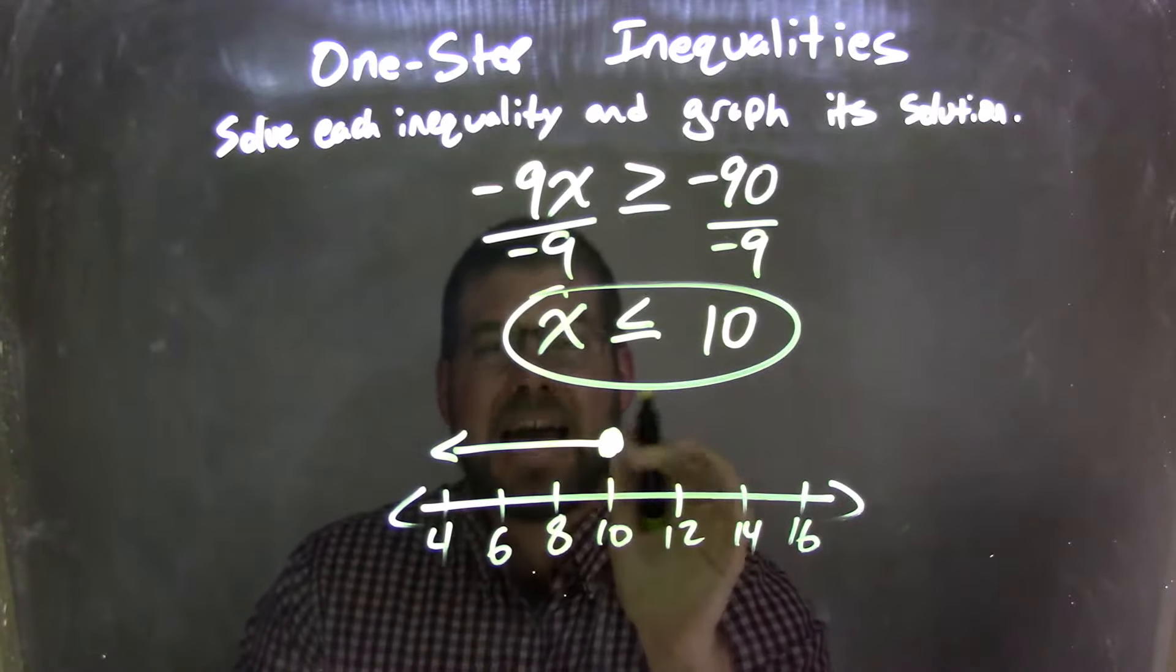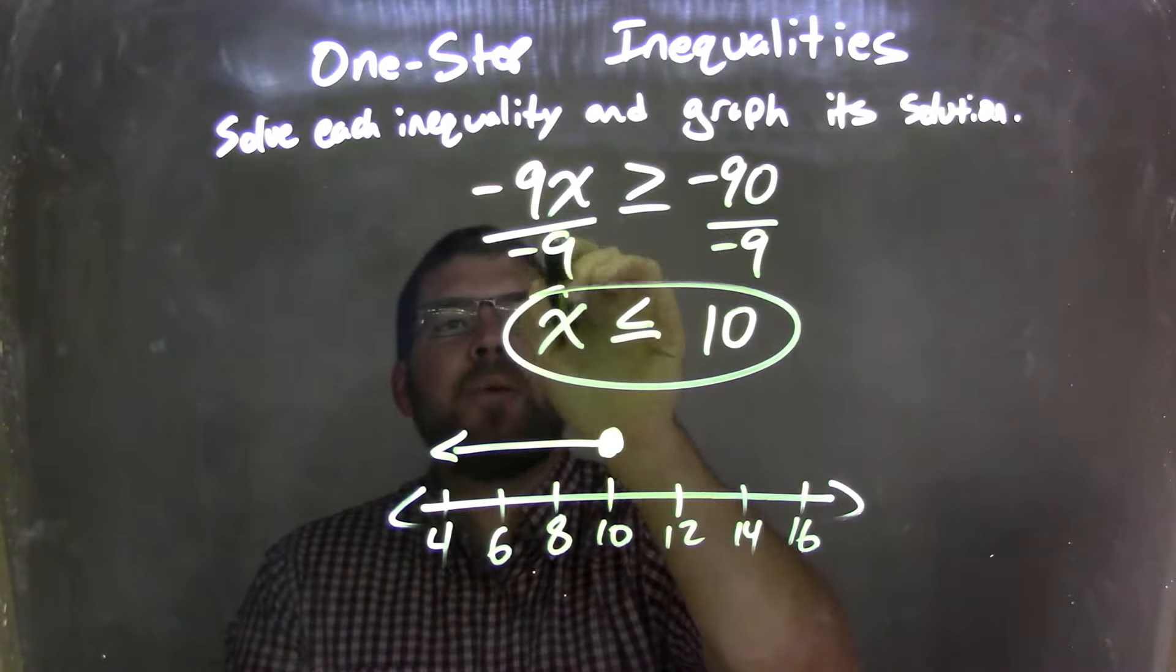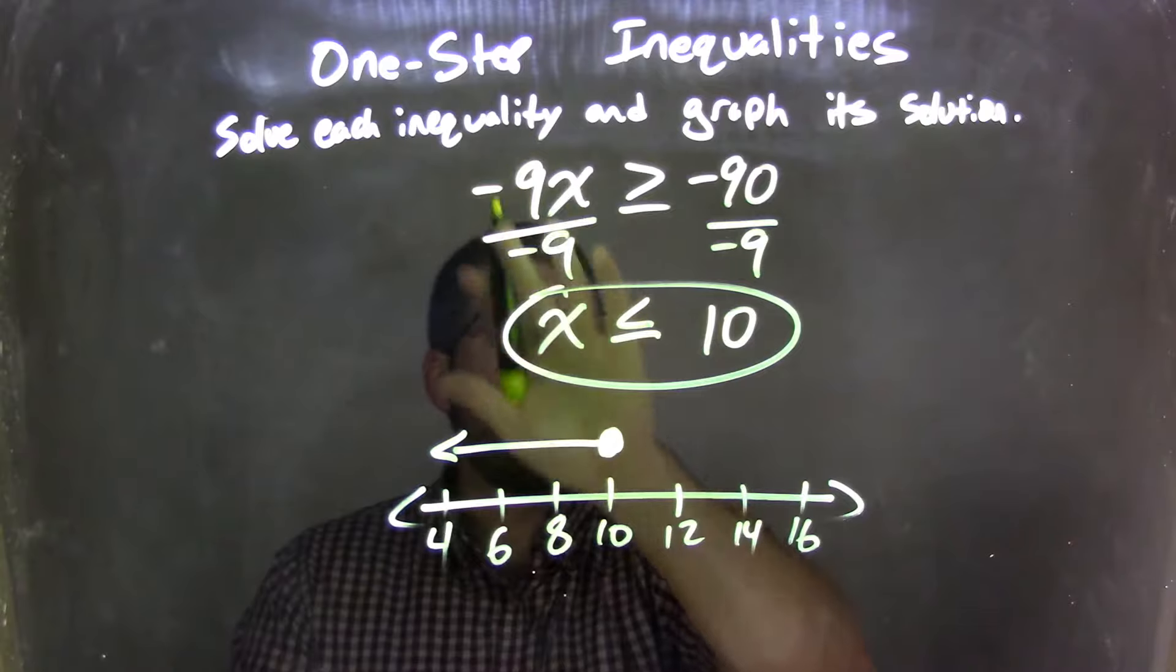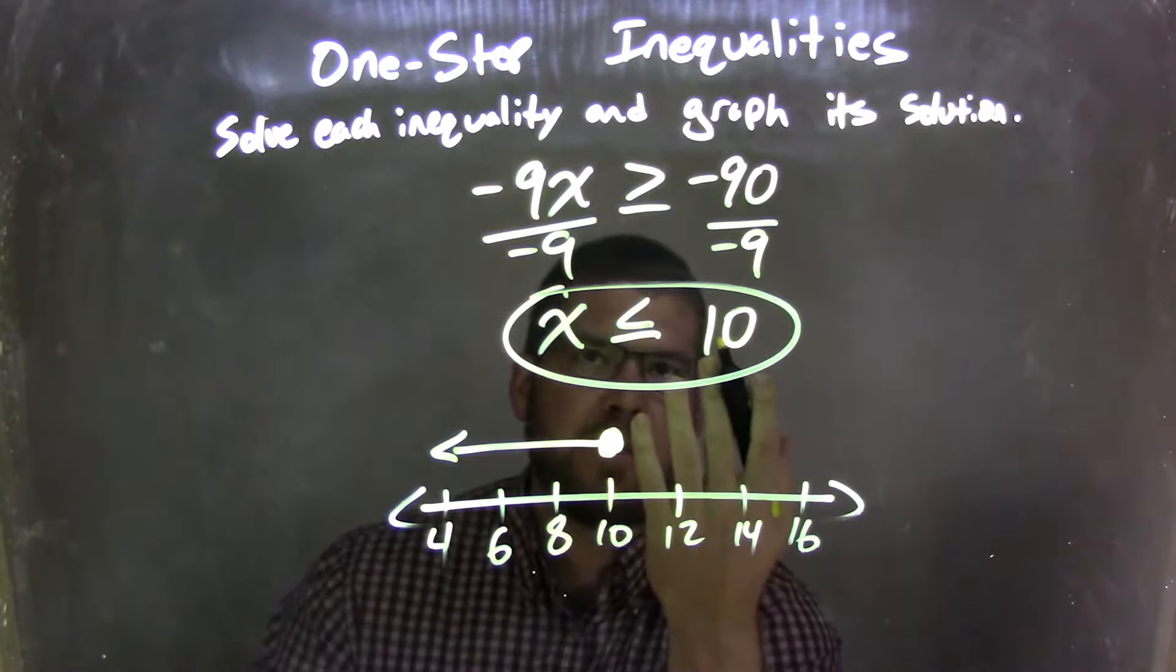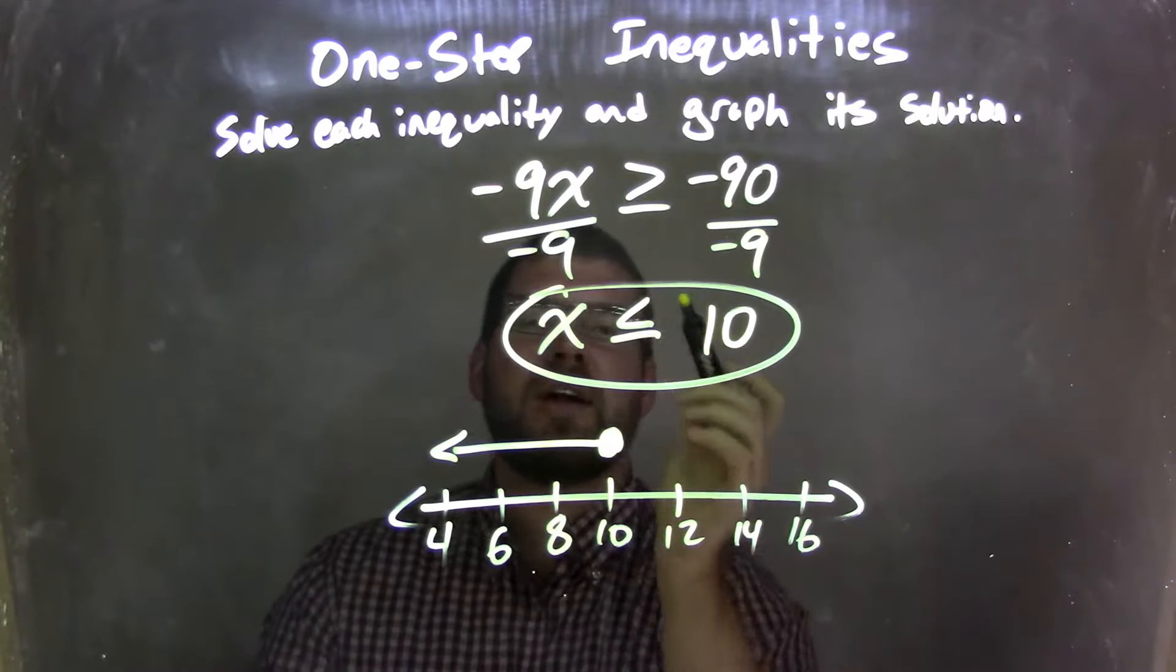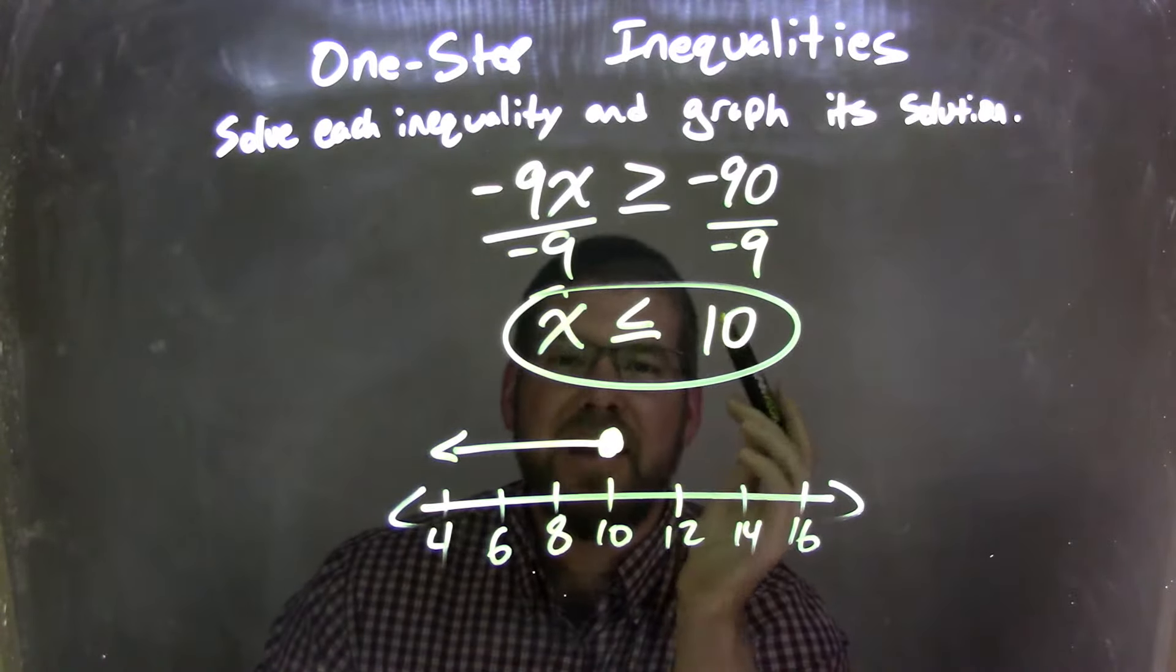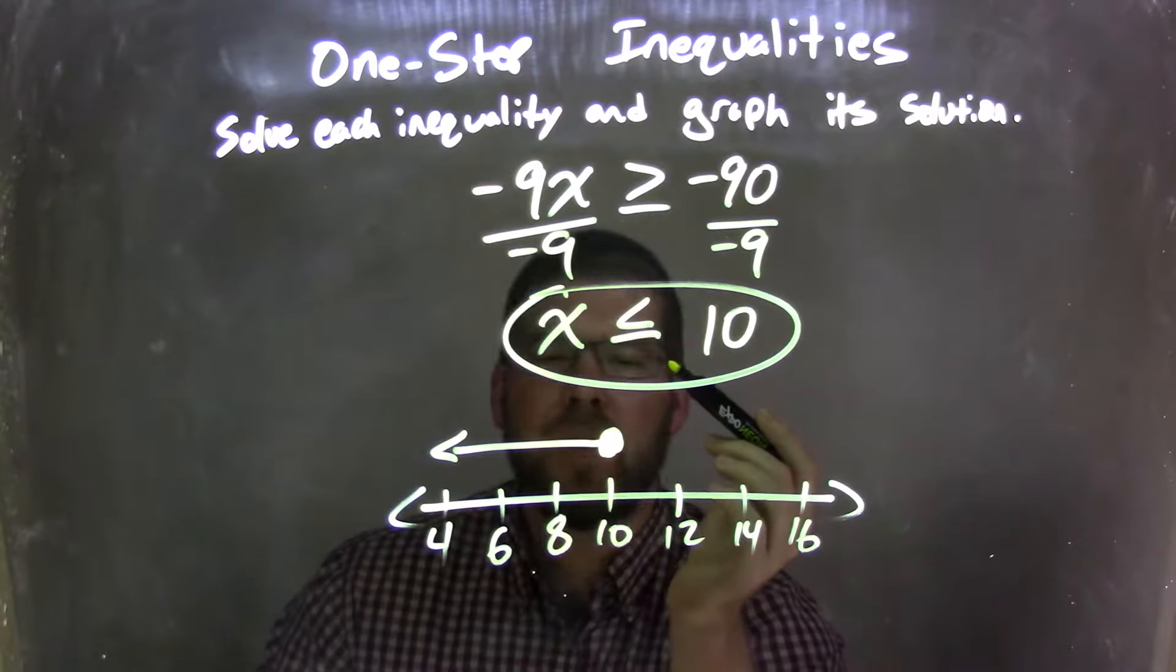Now remember, I can't forget it, when we divide by a negative over an inequality, that's one of the causes to flip that inequality. So we went from a greater than or equal to sign to less than or equal to sign. That's probably the most important part of this problem here.